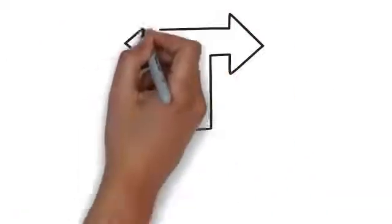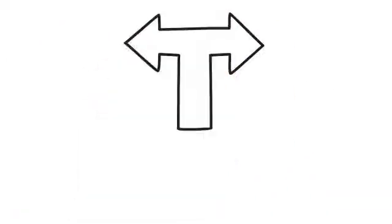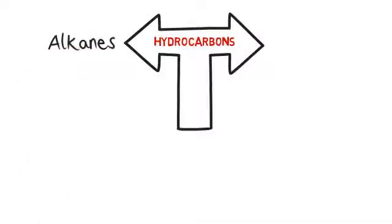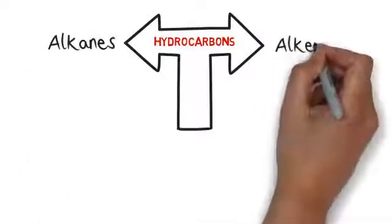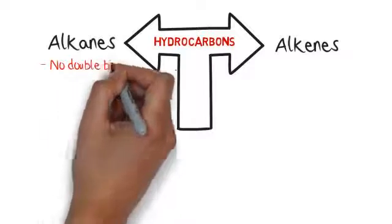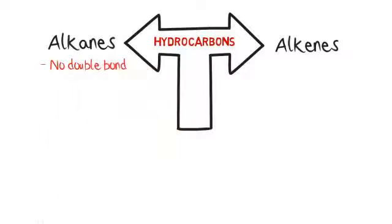Hydrocarbons can be broken down into two distinctive types: alkanes and alkenes. An alkane, spelt A-L-K-A-N-E, has no double bond.